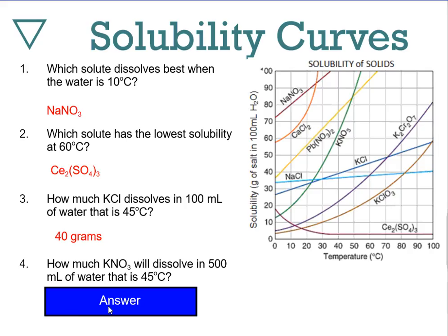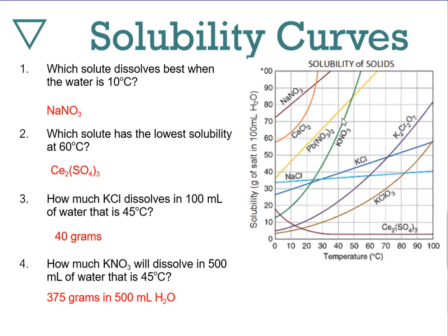How much potassium nitrate will dissolve in 500 mL of water at 45°C? The y-axis is per 100 mL, so multiply your reading by 5. At 45°C, the potassium nitrate curve reads about 75 grams per 100 mL. 75 times 5 equals 375 grams — so 375 grams of potassium nitrate will dissolve in 500 mL of water at 45°C.